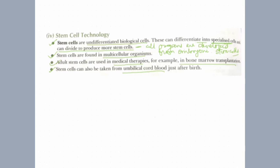Just after the birth of a baby, umbilical cord blood is taken and from that stem cells can be isolated. Those stem cells can be used for treatment of all diseases. Because stem cells can differentiate into any kind of cells — whether bone cells, brain cells, or organ cells. If any cells in your body are damaged, you can transplant stem cells, and that will form that organ.